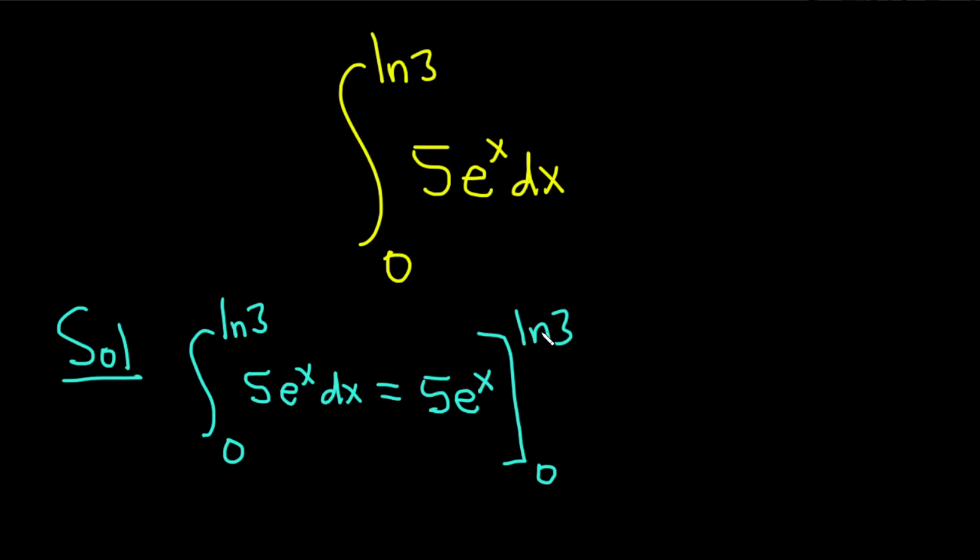You always plug in the top number first. So this is 5 and I'm going to leave the 5 out in parentheses. Plugging this in for the x, we get e to the ln 3. Subtract, plug in this for the x, you get e to the 0.